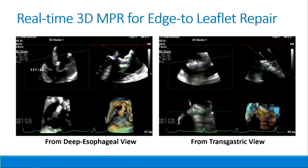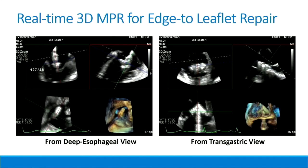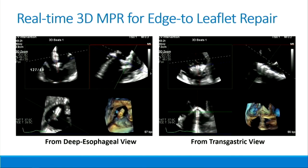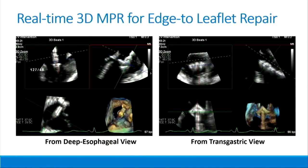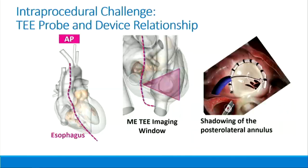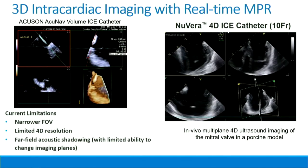This is an edge-to-leaflet repair using both deep esophageal and transgastric views to reorient the two long-axis views and best image the grasping and clasping of the leaflets. The main problem with imaging for procedures is the probe-and-device relationship. The esophageal path is what it is, and the path of the devices typically comes from the SVC or IVC. Consequently, the device is between the imaging probe and the tricuspid valve, causing shadowing of the annulus. For the cardioband device, somewhere between anchors 12 and 16, you will most commonly get acoustic shadowing.